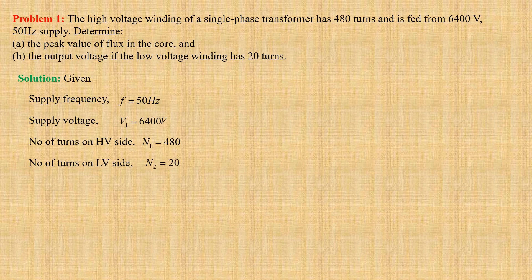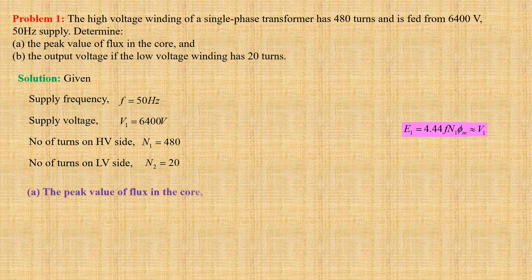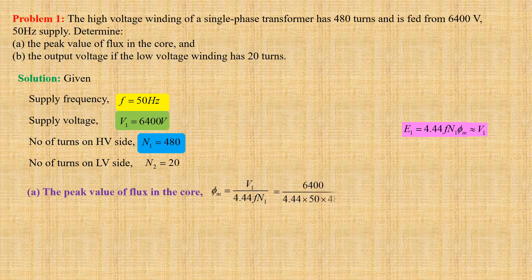The induced EMF in the high voltage winding E1 equals 4.44 × F × N1 × φM, which is approximately equal to V1. Therefore the peak value of flux in the core φM equals V1 divided by 4.44 × F × N1, that is 6400 divided by 4.44 × 50 × 480, which gives us 0.06 Weber.